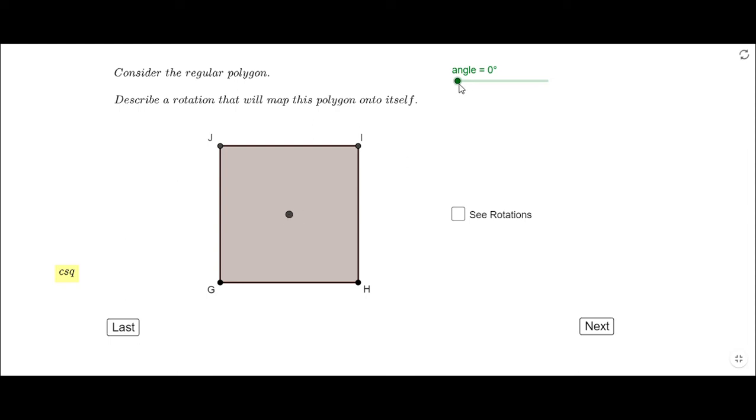We notice that the first time when the polygon maps onto itself is 90°. Why 90°? Because we have 360° divided by four sides, that is 90°. That's the first time when the polygon maps onto itself. Then we're going to notice the next time will be 180°, a multiple of 90°, then 270°.